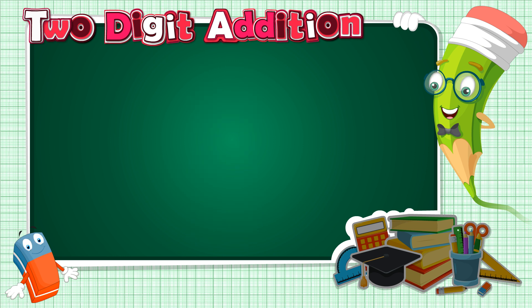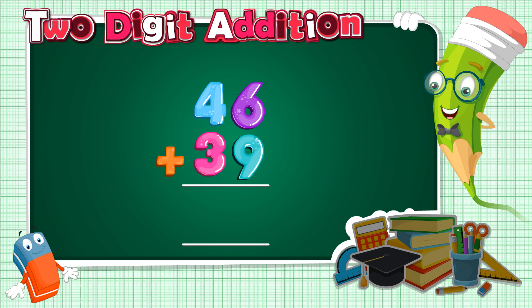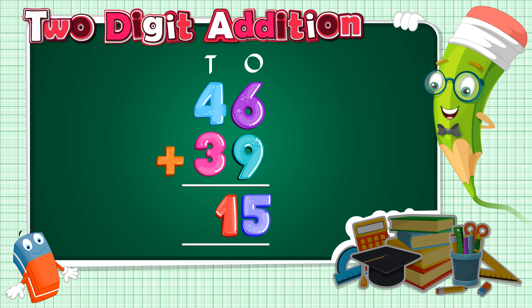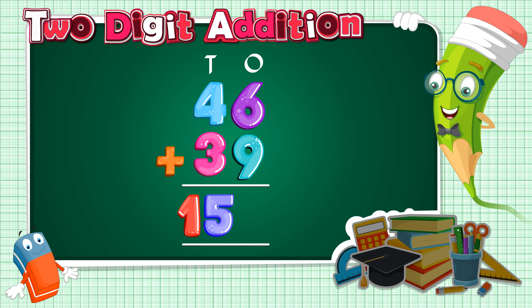Here is another example: 46 plus 39. Write O above the 1's column, which represents the 1's place. Write T above the 10's column, which represents the 10's place. Let's start with the 1's. 6 plus 9 is equal to 15. But where will we place the number 15 — either under the 1's column or under the 10's column — because the number has 2 digits?